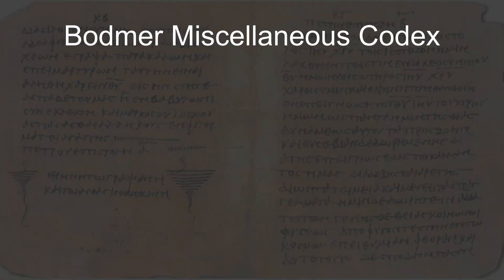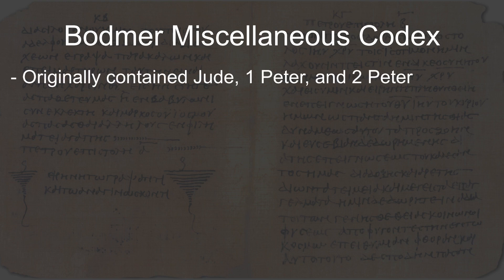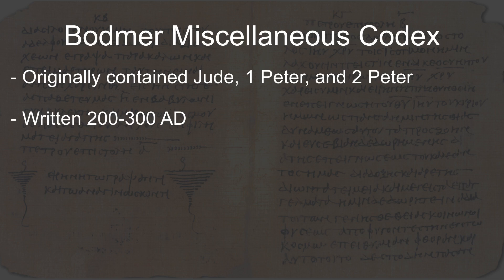These papyri were originally part of a single codex containing Jude, 1 Peter, and 2 Peter. The codex has been dated to the 3rd or 4th century AD, making it the earliest known complete manuscript of these letters.